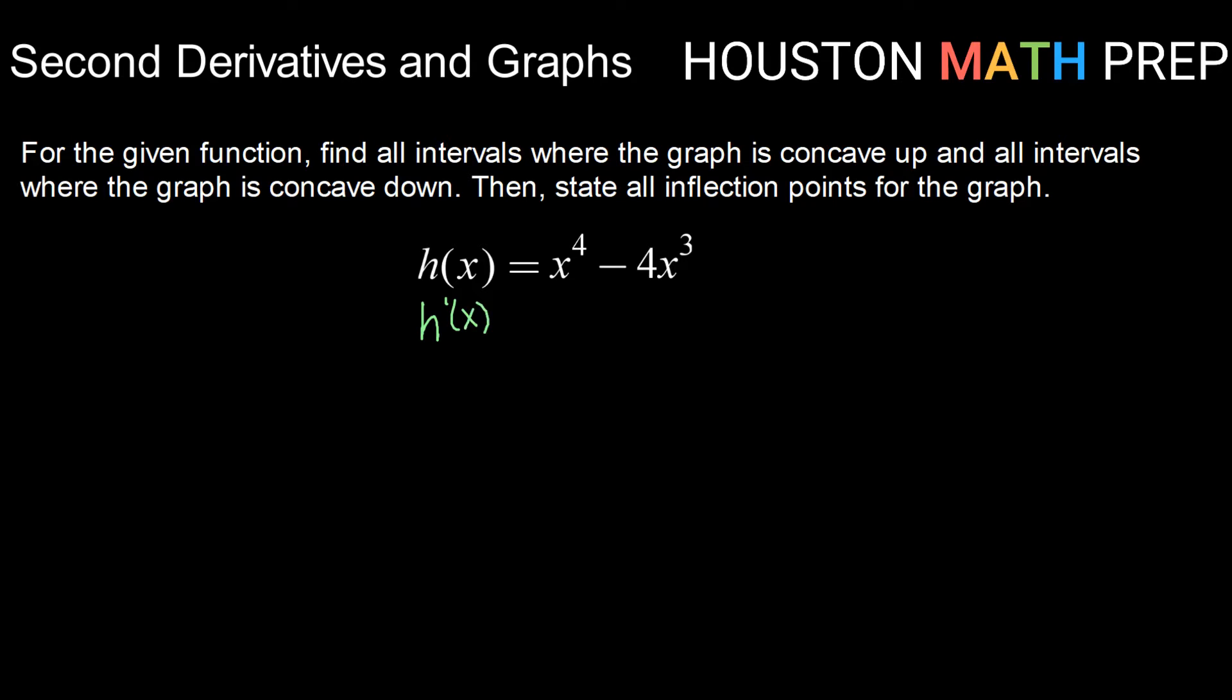In order to get to the second derivative, I need to go through the first derivative, which for this function would be 4x cubed minus 12x squared. And then our second derivative will be the derivative of that, which will be 12x squared minus 24x.